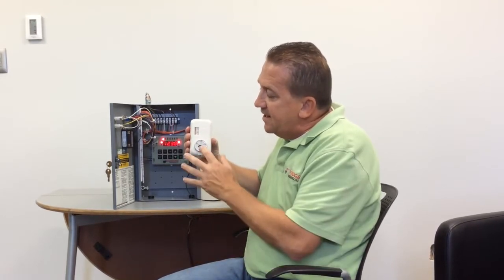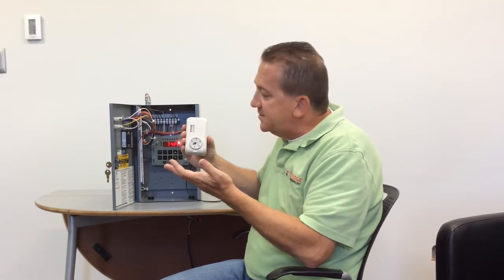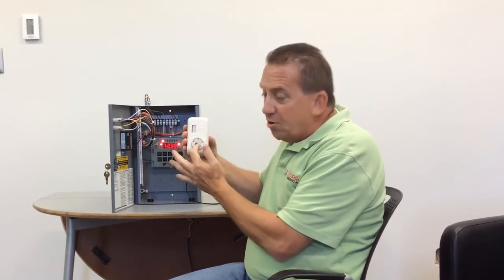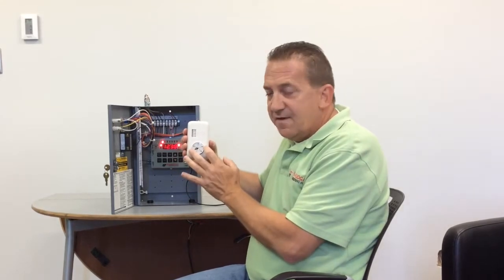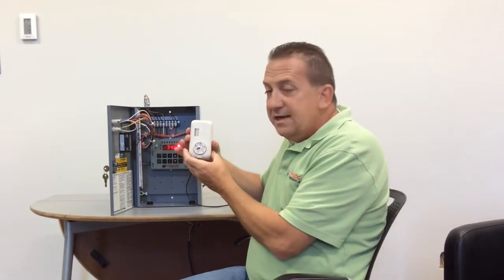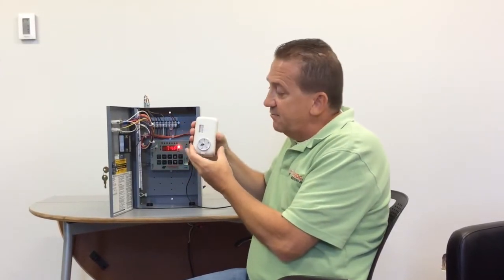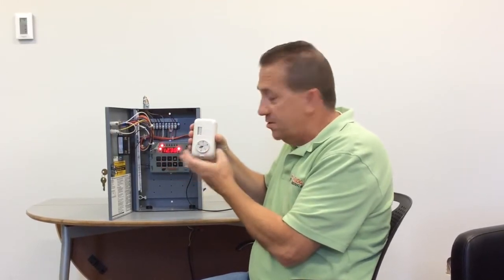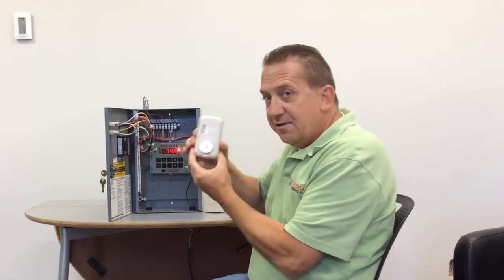And what this control does is it tells the amplifier up in the heater whether it needs make-up air or space heat. So whenever this dial is satisfied, let's just say it's on 70 and it's 72 degrees in the space, it's going to tell the amplifier it needs just make-up air. Whenever it's below 70 degrees, it's not satisfied, it's going to tell the heater it needs space heat, it's going to ramp the discharge temperature up to possibly 160 degree discharge. Now this is a standalone stat.